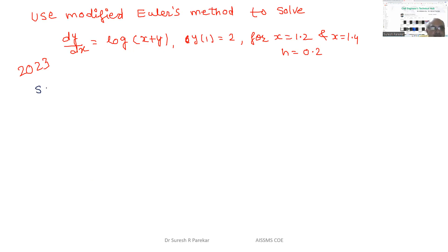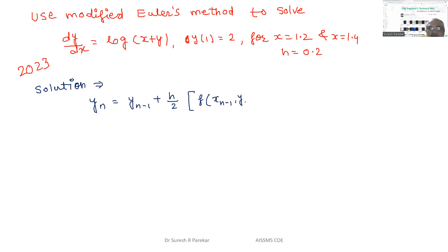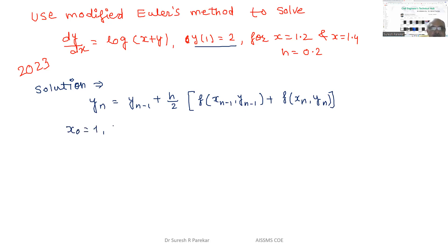Solution. I already mentioned the formula; I will mention it again because it is most important. We have y_n = y_(n-1) + (h/2) * [f(x_(n-1), y_(n-1)) + f(x_n, y_n)]. Now we have the initial values given, and we will go for f(x_(n-1), y_(n-1)).